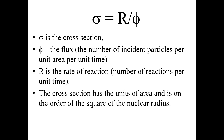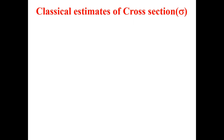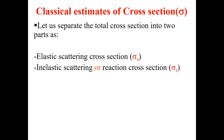The cross-section has the unit of area and is on the order of the square of the nucleus radius. We commonly use the unit called the barn, and one barn is equal to 10 raised to power minus 24 centimeter square. Now let's separate the total cross-section into two parts: one is the elastic scattering cross-section, in which energy and momentum are conserved, and the other is the inelastic scattering or reaction cross-section, denoted by sigma r.